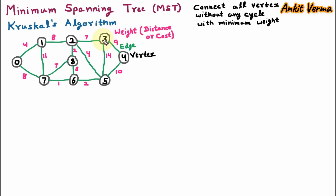This weight can be the distance or the cost. For example, from vertex 3 to vertex 4 we have an edge with weight 9. If 9 is in kilometers then it is a distance, or if 9 is in rupees then it is the cost. So from vertex 3 to 4 we may have some distance or cost. To construct the minimum spanning tree the weight should be minimum.